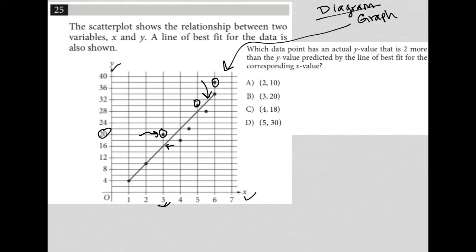Then we have this one when x is 5, and the line of best fit says we should be at 28. The actual point is at 30. It's right there in the middle between 28 and 32. So that is good. I like this (5, 30) answer.